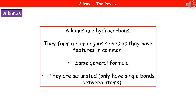When we're talking about an alkane, we are talking about a form of hydrocarbon. They form what's known as a homologous series because they've got key features in common. The features they have in common are that they've got the same general formula and they are saturated. A saturated chemical is one that only has single bonds between the atoms.